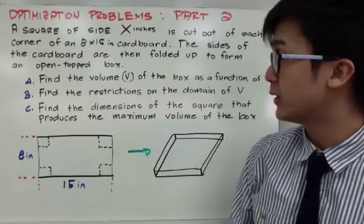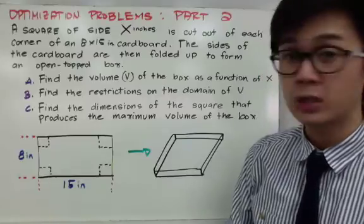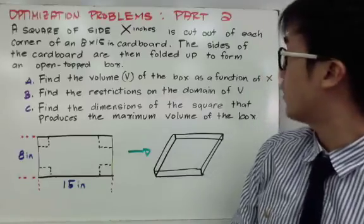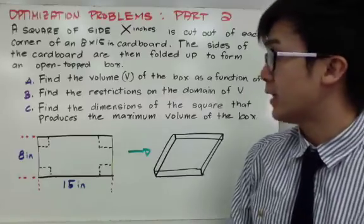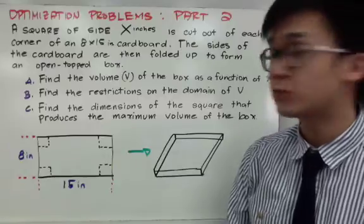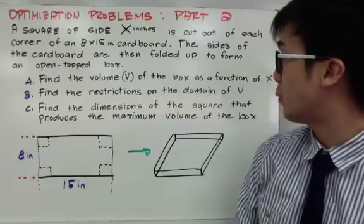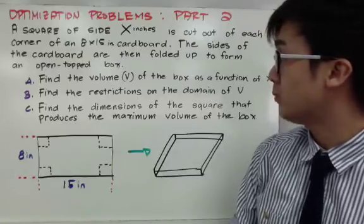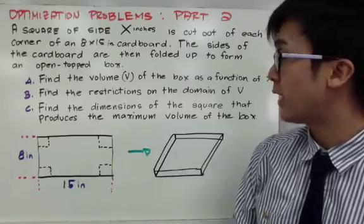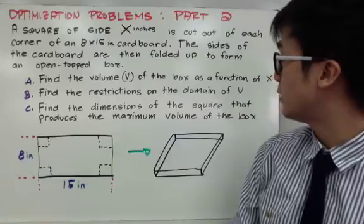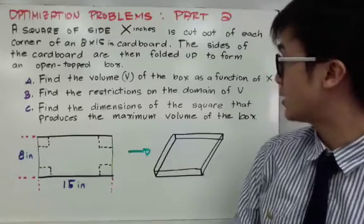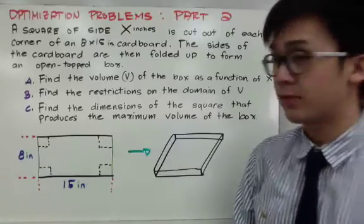The first question is to find the volume of the box as a function of x. The second question will be finding the restriction of the domain of the volume. And the last question will be finding the dimension of the square that produces the maximum volume of the box.